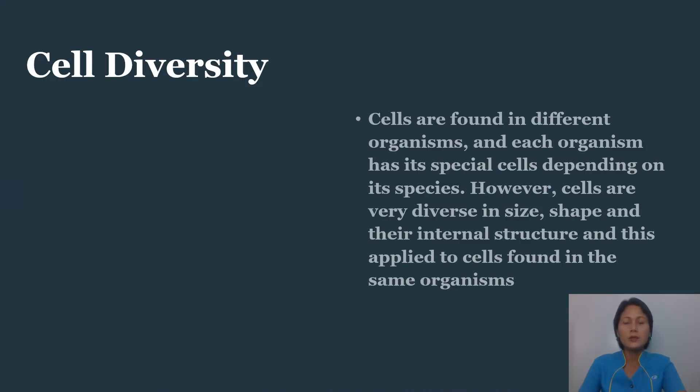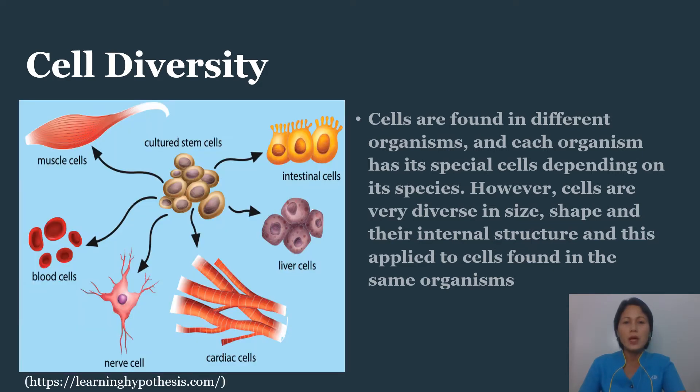Cells are found in different organisms, and each organism has its special cells depending on its species. However, cells are very diverse in size, shape, and their internal structure, and this applied to cells found in the same organisms. This figure shows examples of how diverse human cells can be. Cell diversity arises during the development of the nervous system, and this diversity of cells is influenced by their roles and function within the organism's body.